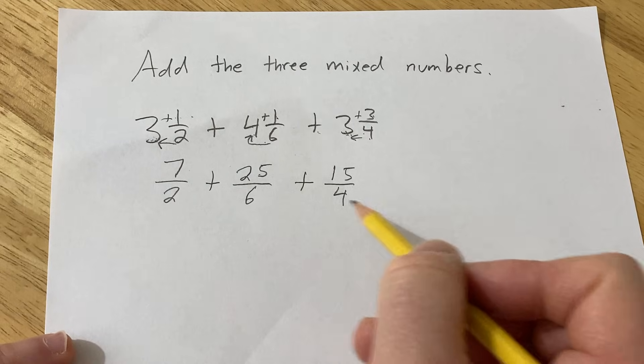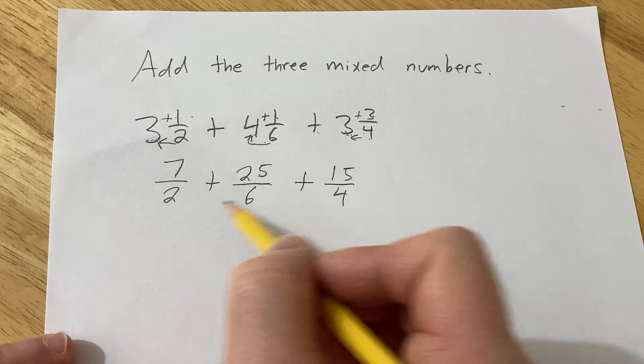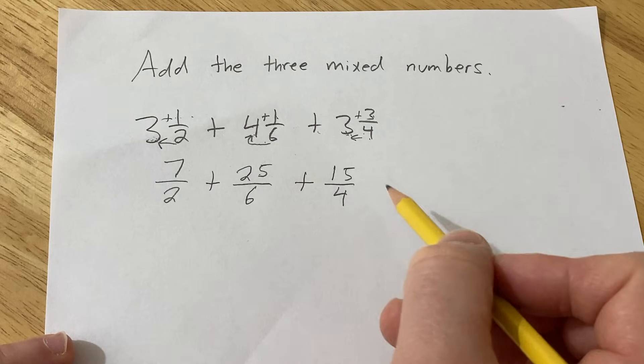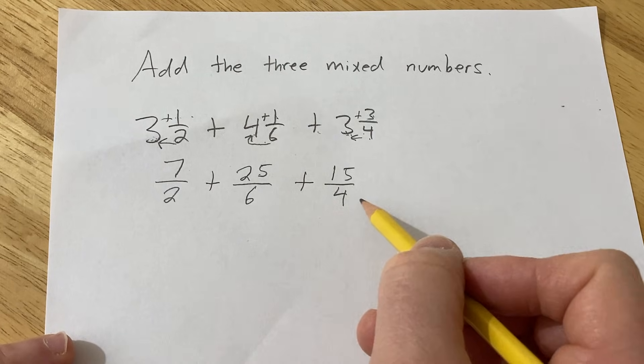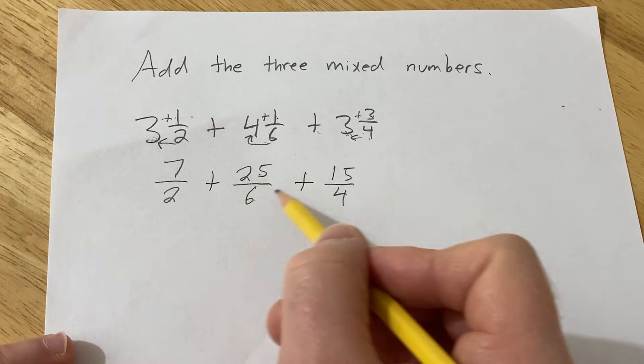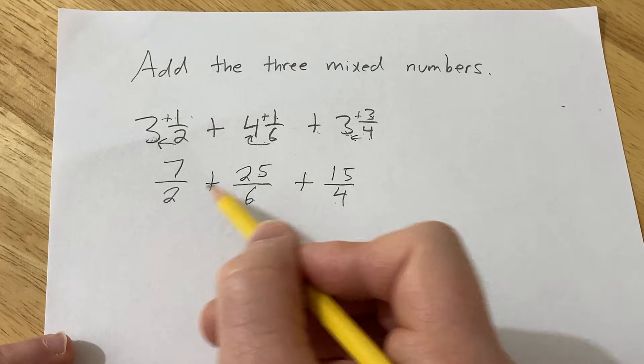So now we need to add these fractions. So in order to add these fractions, the denominators need to be the same. So what you can do is you can try to find a common denominator. So one example of a number that's a common denominator here is 12, because each of these numbers goes into 12. So let's use 12. So we're going to make all of these 12s.